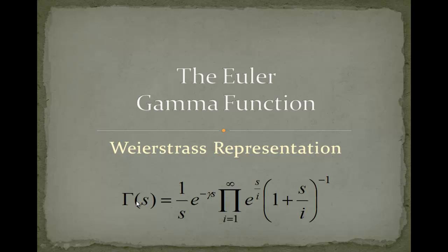The Weierstrass representation looks like the following. Gamma of s is equal to 1 over s multiplied with e to the minus small gamma s. The small gamma is the Euler-Mascheroni constant multiplied with this infinite product e to the s over i. And this bracket 1 plus s over i to the minus 1.